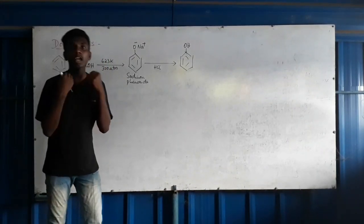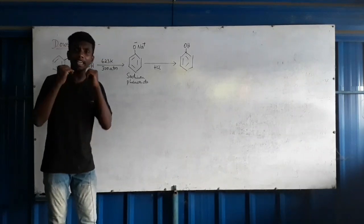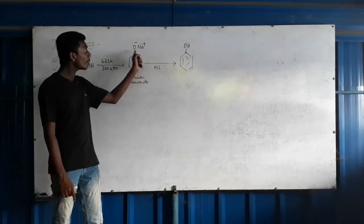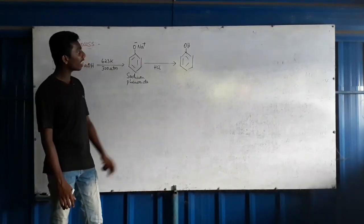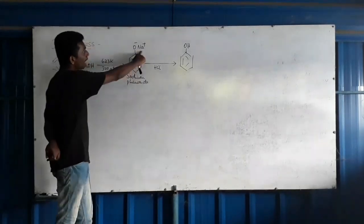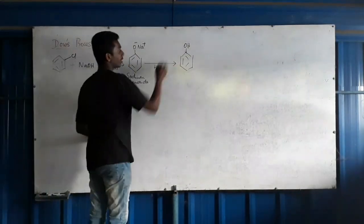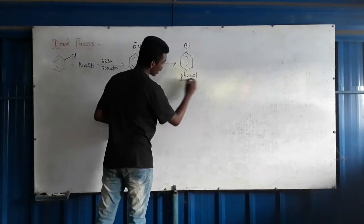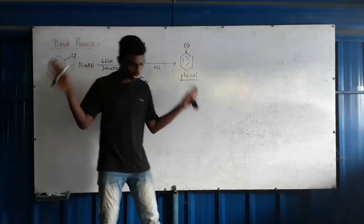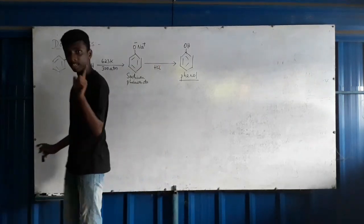Because of this, vigorous conditions are required to react with the nucleophile. The sodium phenoxide intermediate is then converted to phenol by treating with hydrochloric acid. That is the Dow's Process — chlorobenzene to phenol using NaOH under high temperature and pressure.